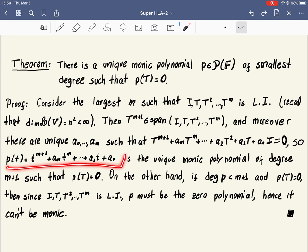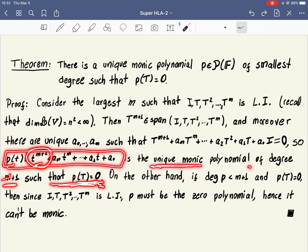This polynomial, first it has degree M plus 1, it has P of T is 0, it's monic, monic means the coefficient here is 1, and it's the unique polynomial with this property, being monic, degree M plus 1, and P of T equals 0.